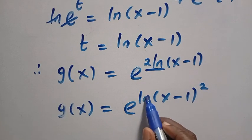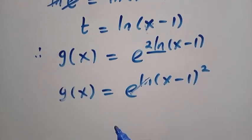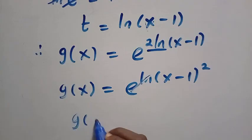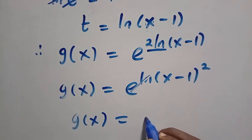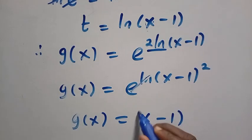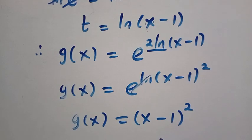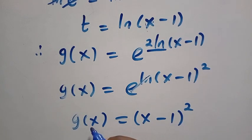We write, e and ln cancel, as we are going to have g of x equals (x minus 1) raised to the power of 2. We have made g of x the subject, as what we are looking for is g of t.